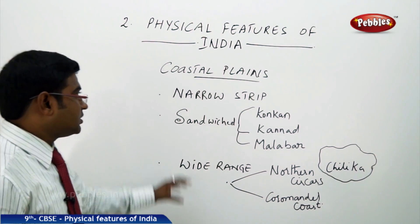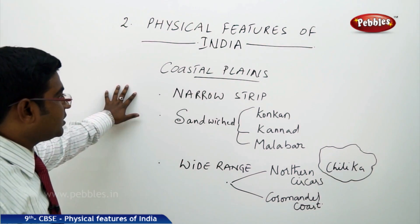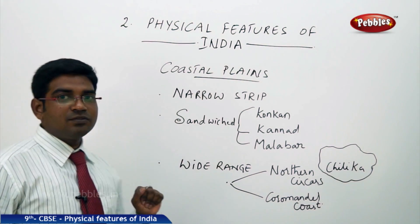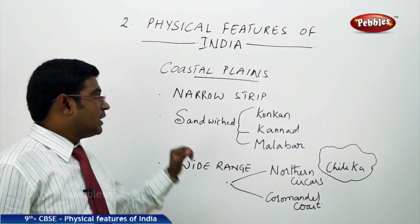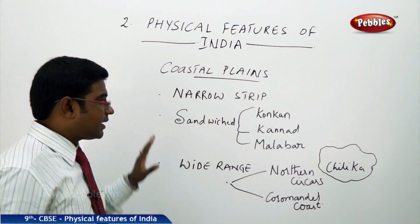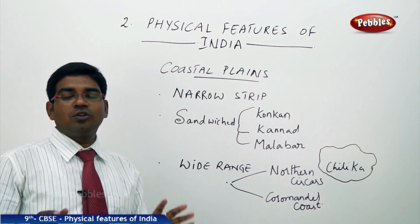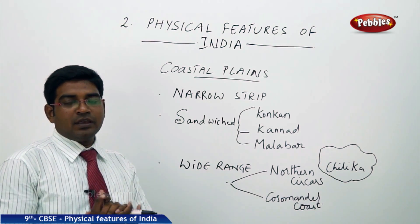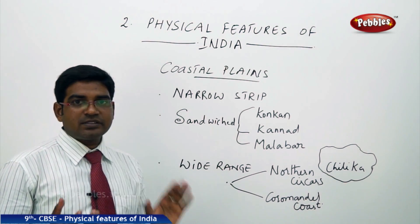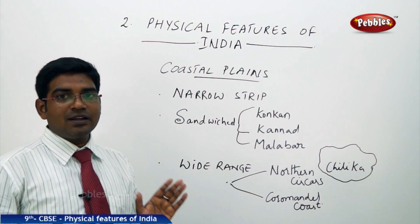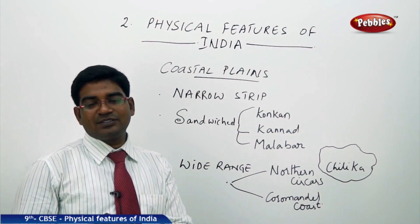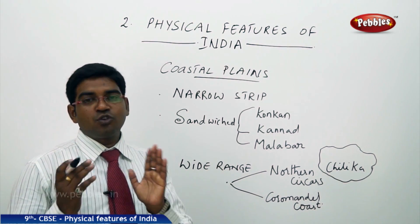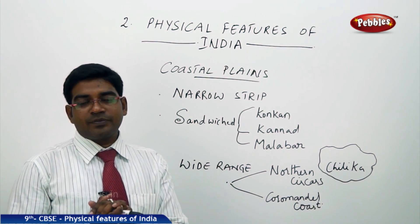The coastal plains are the next important physical division of India. The coastal plains are on both sides — just to the side of the Western Ghats and just the other side of the Eastern Ghats, we have two coastal plains.